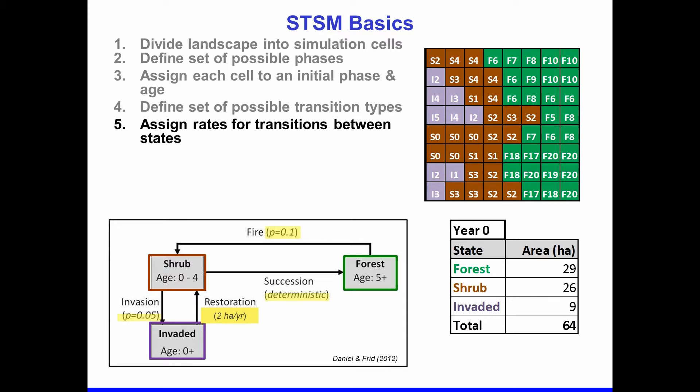There are different kinds of approaches to defining rates for transitions. In this example, succession is a deterministic process that happens with the passage of time — as soon as a cell reaches an age of five, it transitions from shrubland to forest. Fire and invasion are probabilistic processes with a specified probability of occurring at any one point in time during the simulation. Restoration is a management transition assigned a target or budget — for this small landscape, we've assigned a two-hectare-per-year budget, meaning two cells can be restored from invaded to shrubland per year.